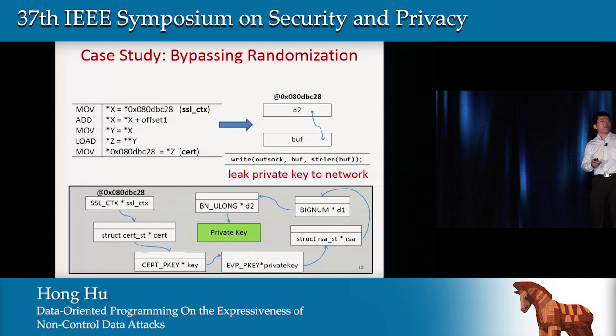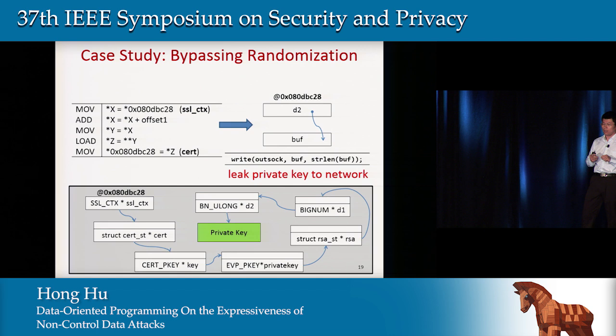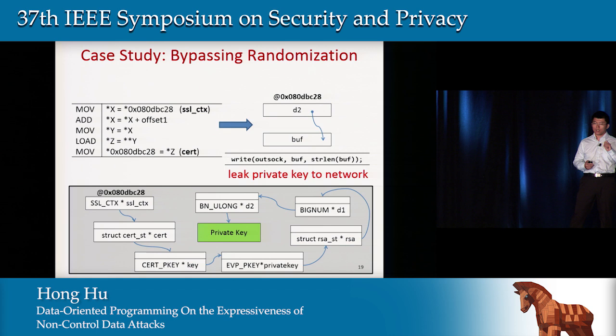Finally, this pointer buffer is corrupted with the randomized address of the private key, and the content of the private key is sent out to the network. In this attack, we did not leak any randomized address to the network, but we still achieved the attack, and throughout this the program's execution totally conformed to the control flow graph.